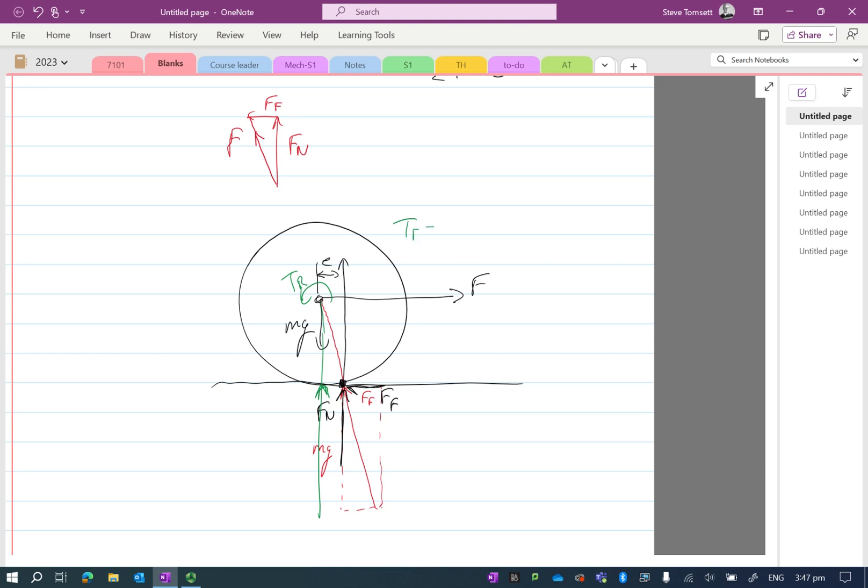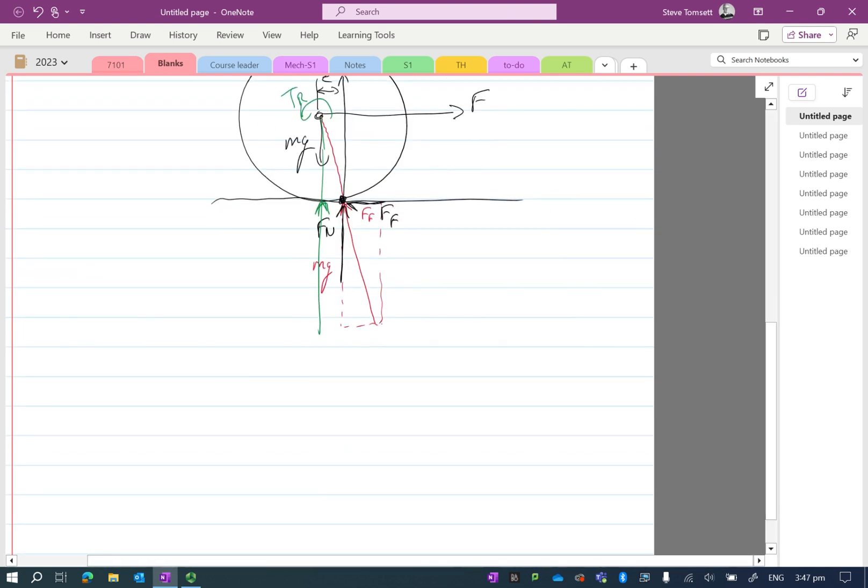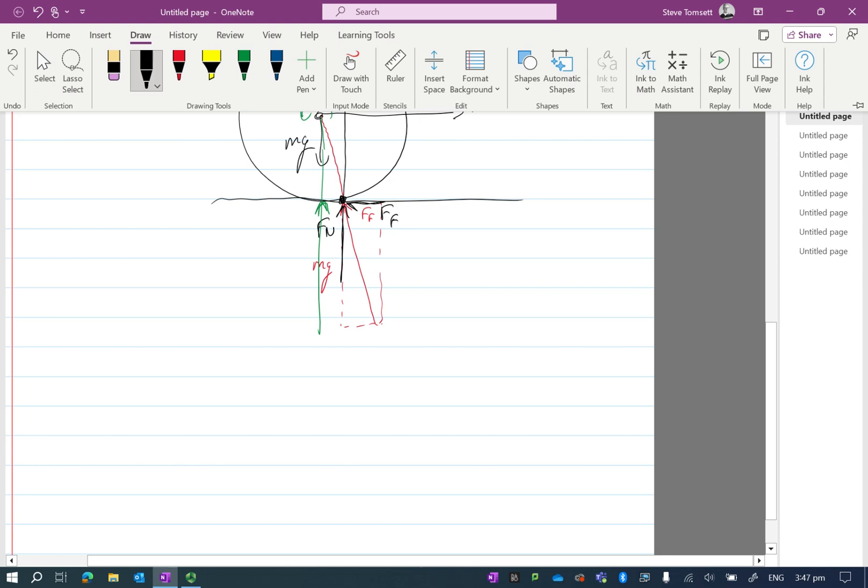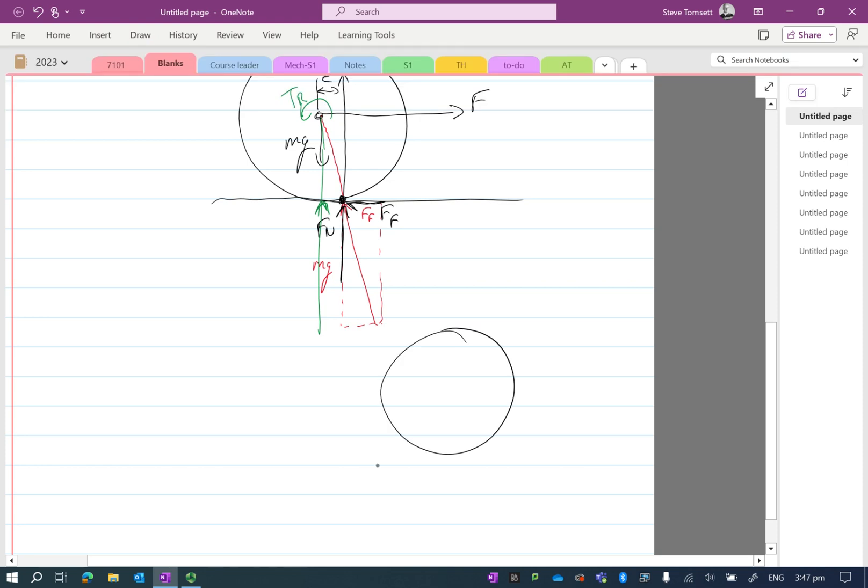Obviously from my diagram, my TR will equal Fn times the eccentricity value. So this is a far easier way to represent the rolling resistance in terms of a free body diagram.